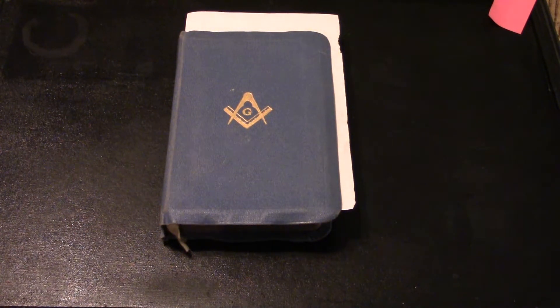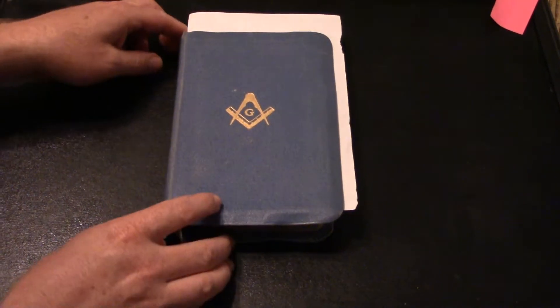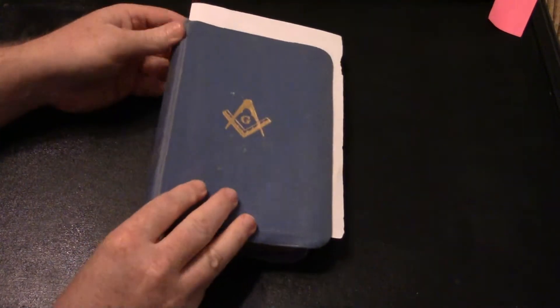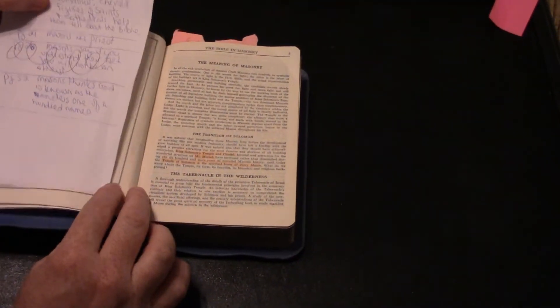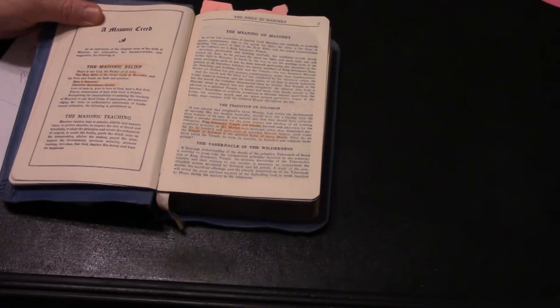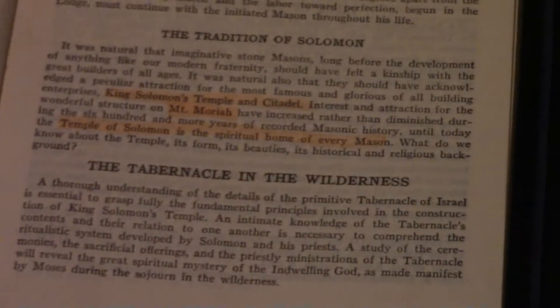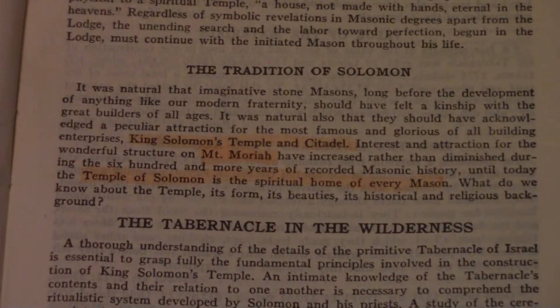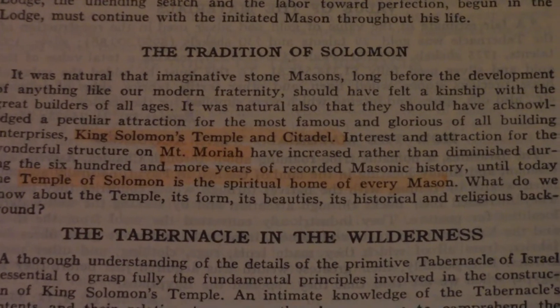Here we got one of my grandfather's mason bibles. This is a Holy Bible, Masonic Edition. So this time we are going to read under the Tradition of Solomon. Let me zoom in here. Hold on. Tradition of Solomon. All right, here it goes.